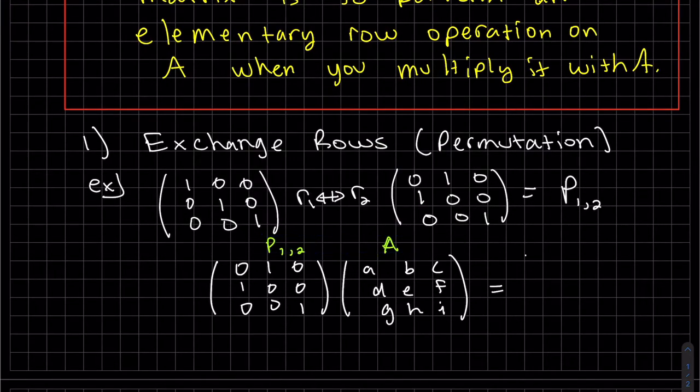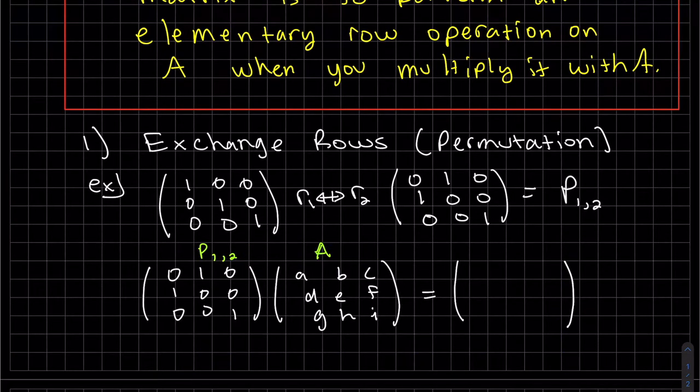When we multiply these, three by three, three by three, we'll get a three by three. We expect it to change rows, but again, this is where you can get practice multiplying. This times this we'll get D in the first spot.